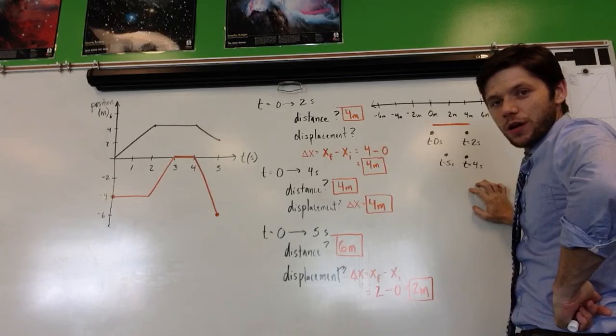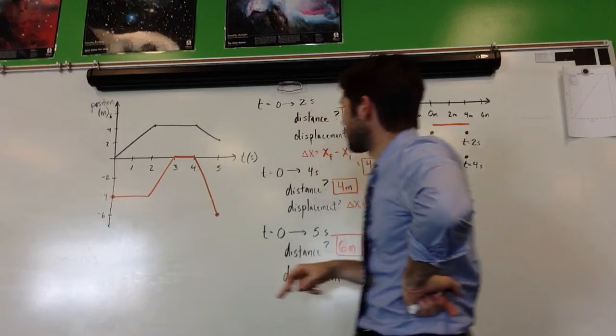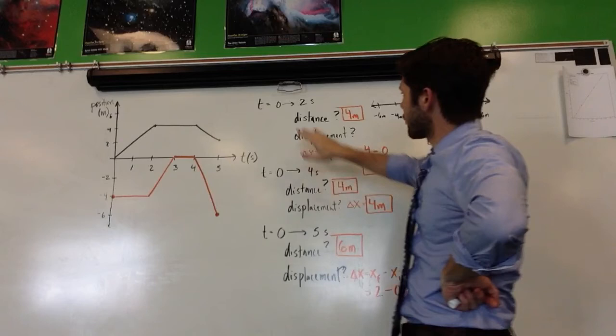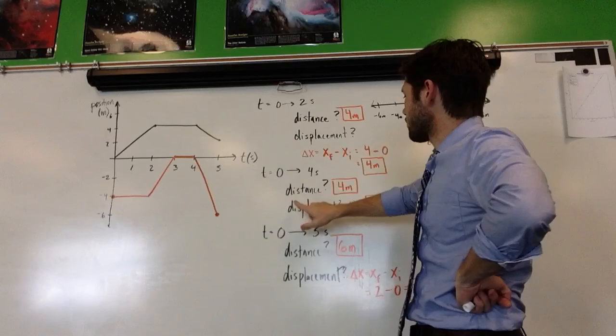So, for your homework this evening, you're going to try all of this for a different line. So, this position time graph, except now with the orange line, I would like for you to first do the diagrammatical representation with all of the dots. Second, for each time interval, t 0 to 2, 0 to 4, 0 to 5, find the distance and displacement for each one. So, you should have those two problems both completed for class tomorrow when you bring them in. Again, call or text or email if you have any questions.